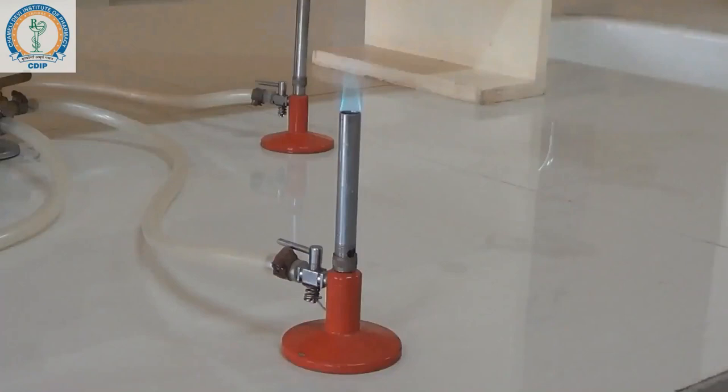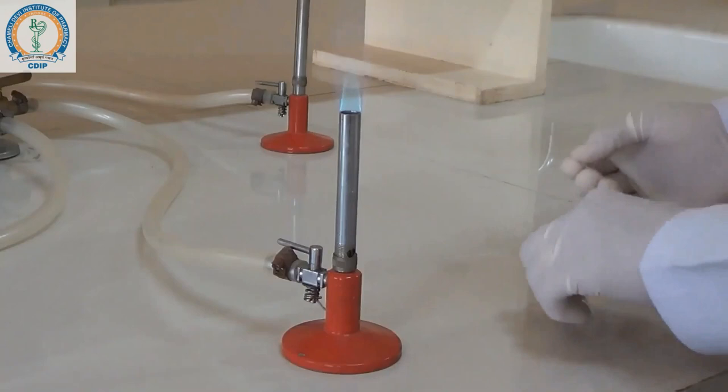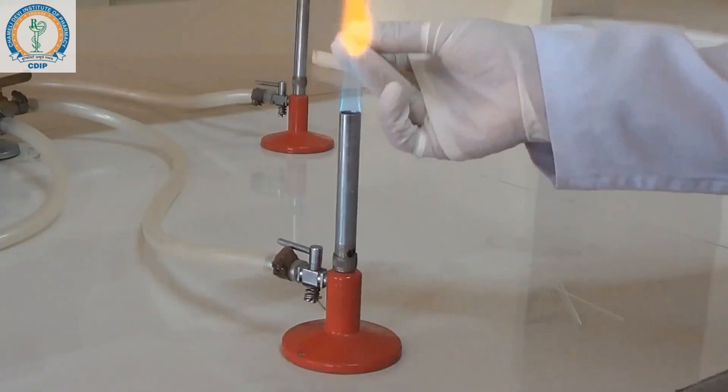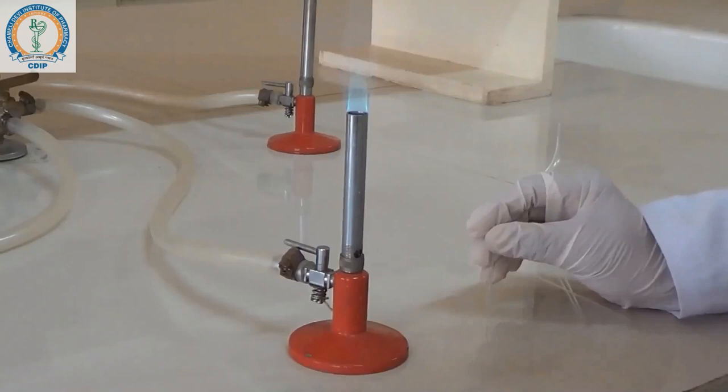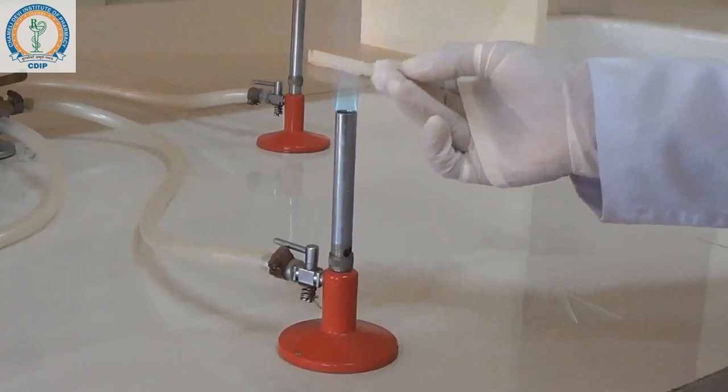The first step is sealing these capillary tubes. For sealing, we take the capillary tubes inside the flame like this, rotating in this manner, then putting the end on the platform so that it will close easily, and tapping it here.